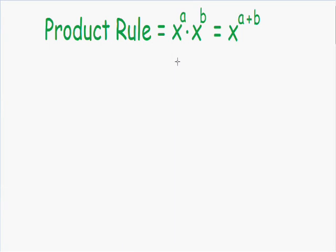The first property I want to talk about is the product rule. The product rule says that if you multiply two exponents with a common base, then you can simplify this by just adding the exponents.